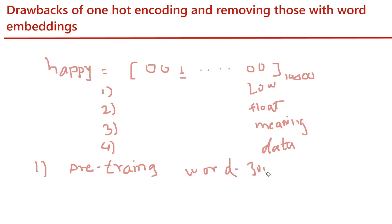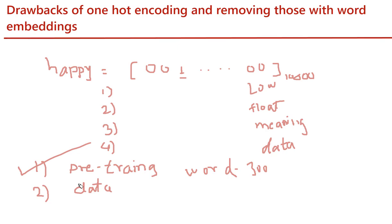The second way is to identify our own word embeddings from the data given for the task. For example, if we want to perform sentiment analysis — identifying whether a given sentence is positive or negative — we have a large corpus and on that corpus we train our model to learn the embeddings. In this lecture we are going to concentrate on pre-trained word embedding, where we are going to use the word2vec model.